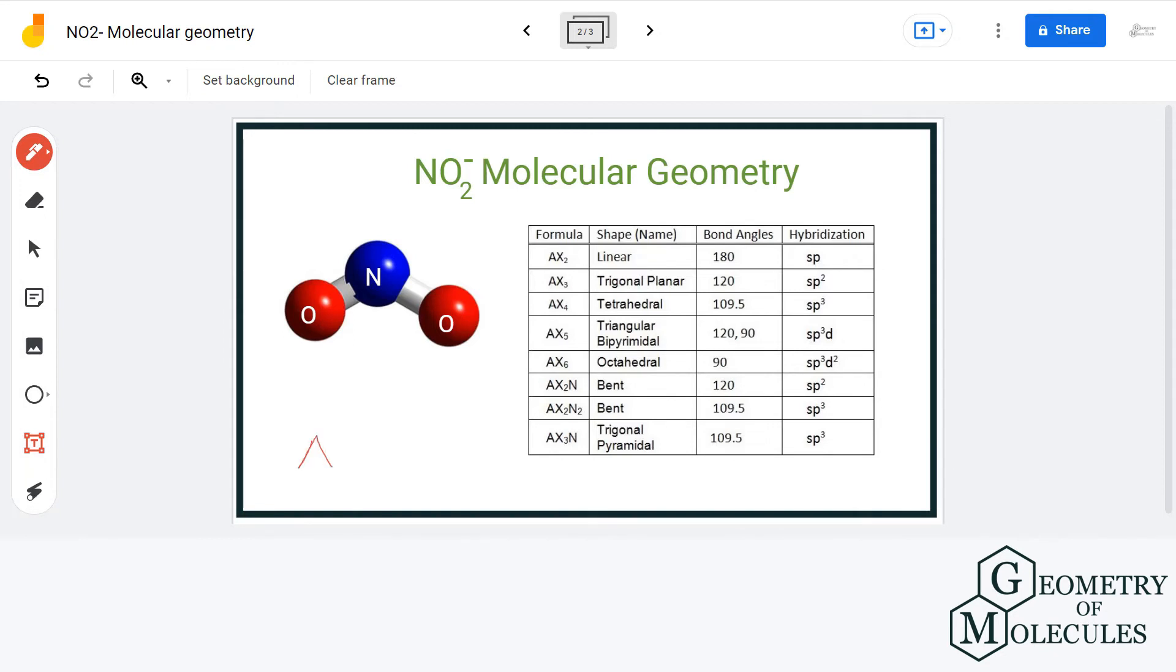So here, A stands for the central atom, X is the number of atoms that are forming bonds with the central atom, and N is the number of lone pairs of electrons present in the central atom.